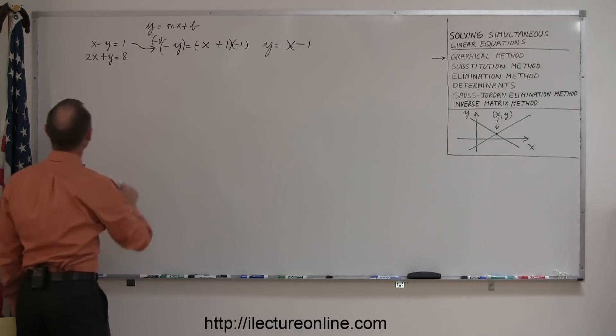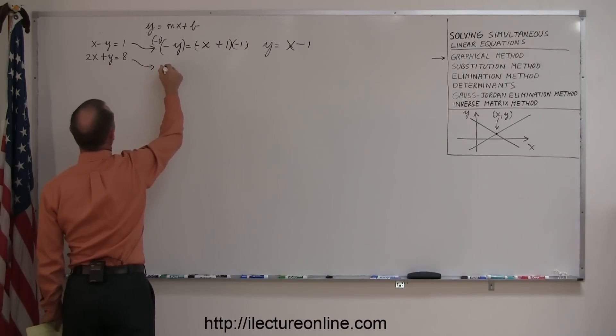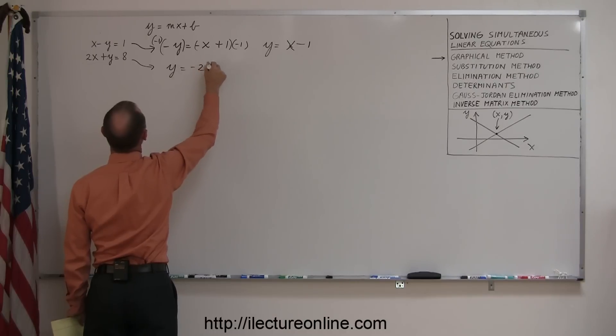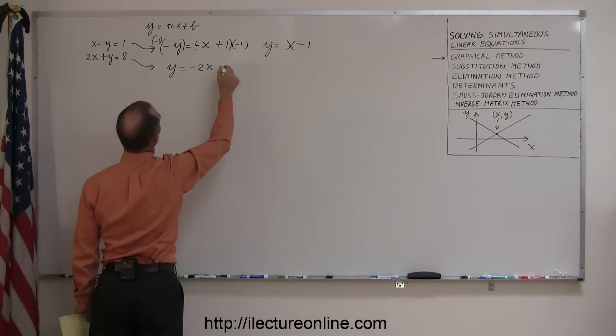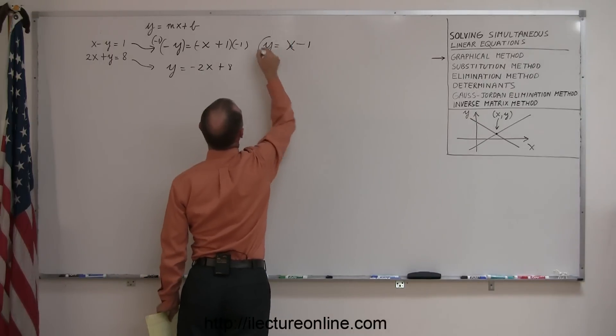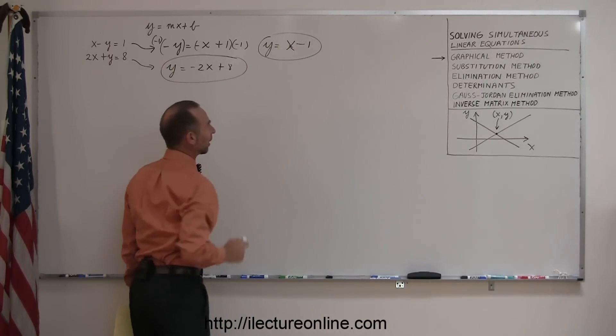All right, now I'll take my second equation. And here, all I have to do is move the 2x across. So here, I end up with y equals, again, when I cross the equals sign, the sign changes, 2x becomes a minus 2x plus 8. And so now I have my two equations, y equals x minus 1, and y equals minus 2x plus 8.